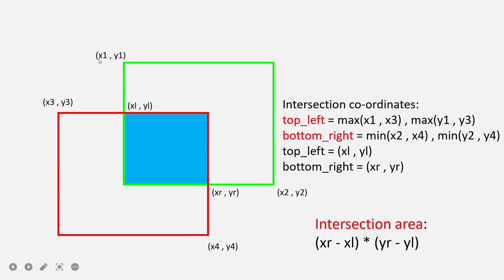For the green box (sq1): width = x2 − x1 and height = y2 − y1. For the red predicted box (sq2): width = x4 − x3 and height = y4 − y3. These individual box areas are straightforward to compute from their corner coordinates.